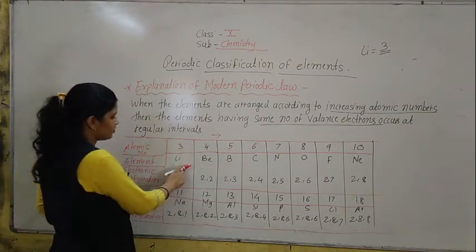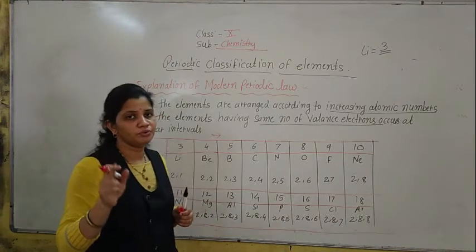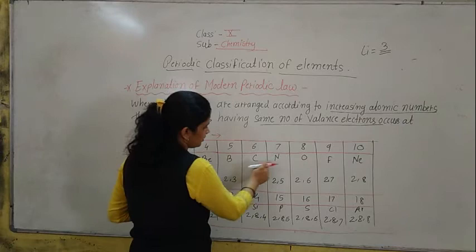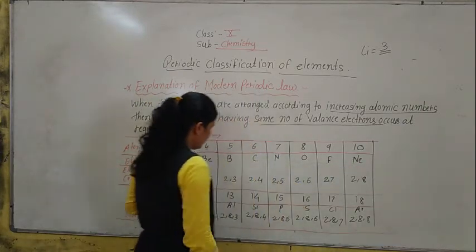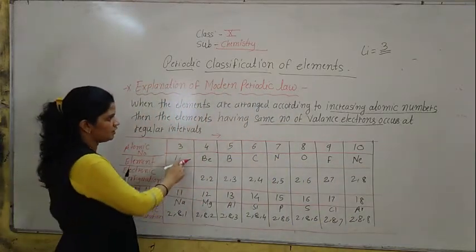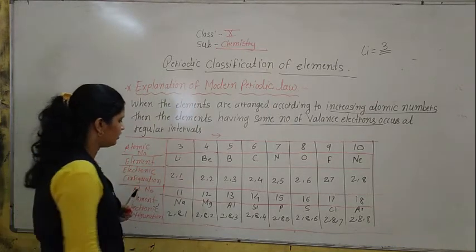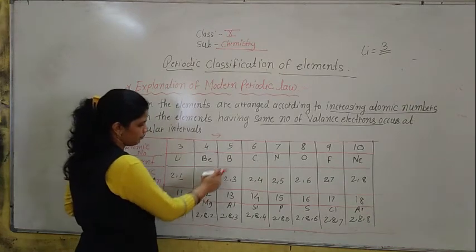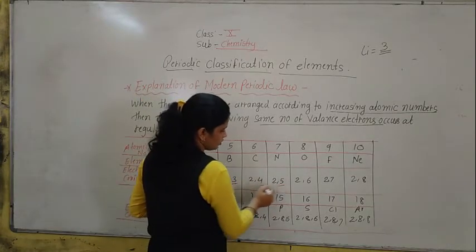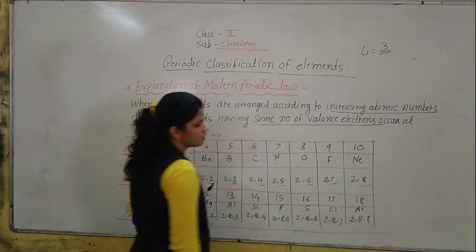The element with atomic number 3 is lithium. I have written only symbols here — you should know the name of each symbol. See: lithium, beryllium, boron, carbon, nitrogen, oxygen, fluorine, and neon. Their electronic configurations are: lithium — 2, 1 (one electron in the outermost shell); atomic number 4 — 2, 2; then 2, 3; 2, 4; nitrogen — 2, 5; oxygen — 2, 6; fluorine — 2, 7; and neon — 2, 8 electrons.